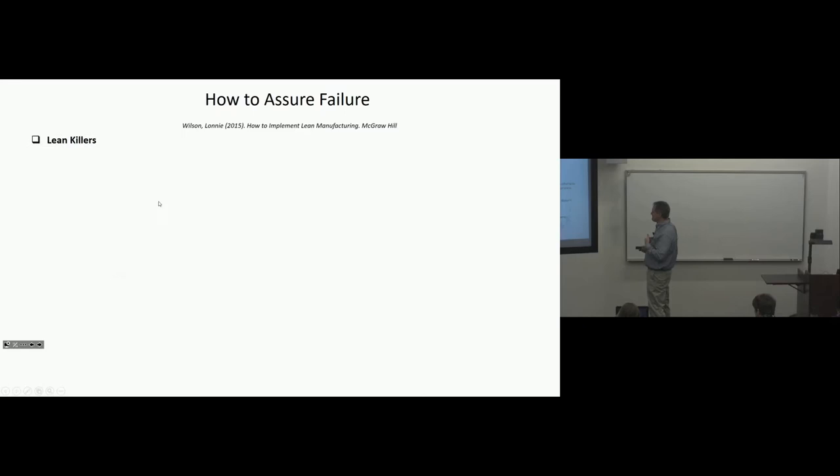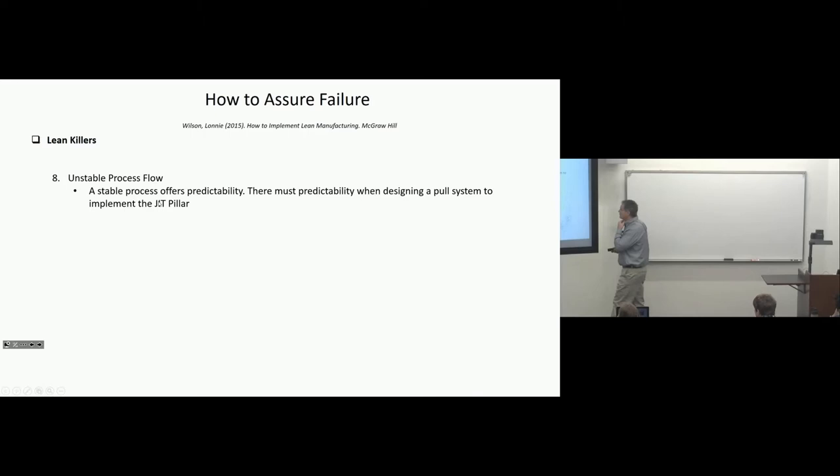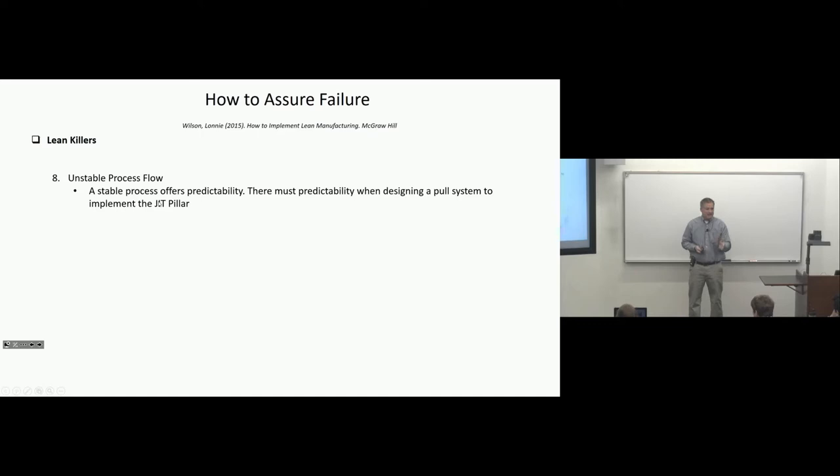Unstable process flow. Stable process offers predictability. Stability, when you saw the lean house, I think some versions of it, stability is at the base. A stable process offers predictability. There must be predictability when designing a pull system to implement the JIT pillar. It doesn't mean we can't have defects. It means we have to be very sure about what they are and it has to be very stable so we can plan around it. They can't be wildly all over the map.